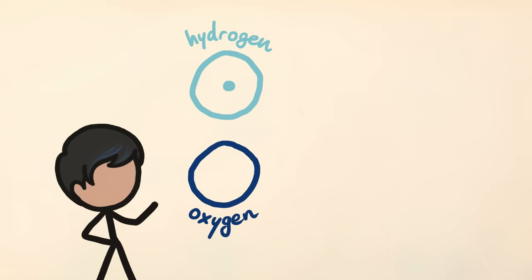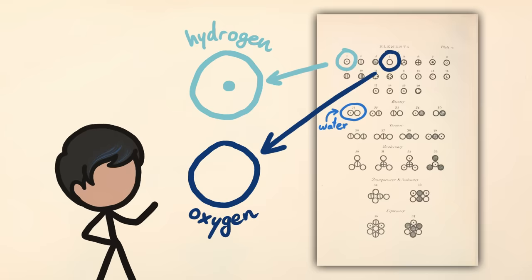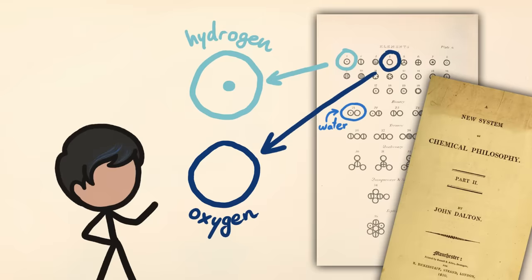By the way, did you notice how we kept using these symbols for hydrogen and oxygen? They come from Dalton's new system of chemical philosophy, the book that contains the very first drawings of atoms and molecules. Of course, we don't use these anymore.